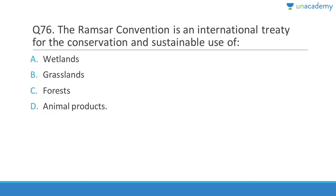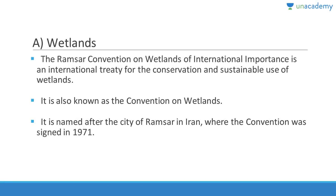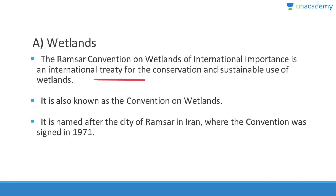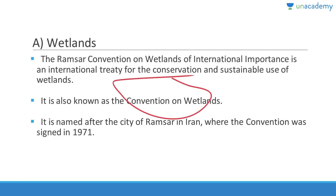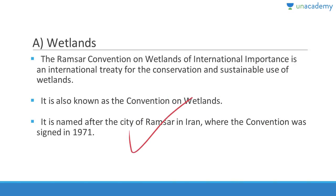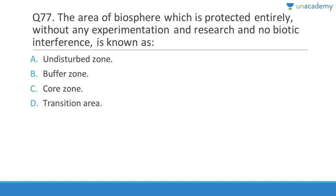Question 76: The Ramsar Convention is an international treaty — it was signed in Ramsar, Iran — and it is related to wetlands. Answer is A. The Ramsar Convention on Wetlands of International Importance is an international treaty for the conservation and sustainable use of wetlands. It is also known as the Convention on Wetlands and is named after the city of Ramsar in Iran where the convention was signed in 1971.